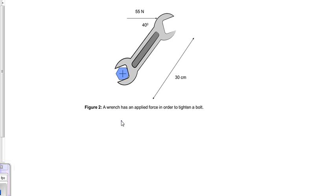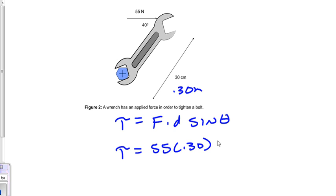Now simple equation: torque equals force times distance times the sine of theta. So we'll solve that torque is equal to our force 55 Newtons. Our distance is in centimeters, so we'll make that 0.30 meters. So 0.30 multiplied by the sine of 40. And that gets us a torque value of 10.6 Newton meters.